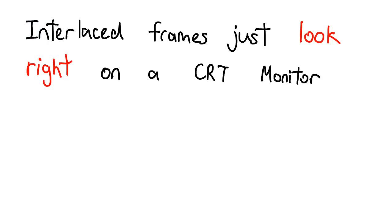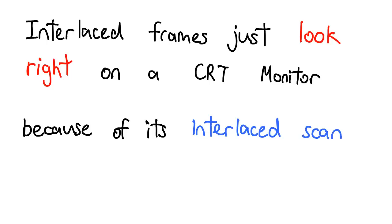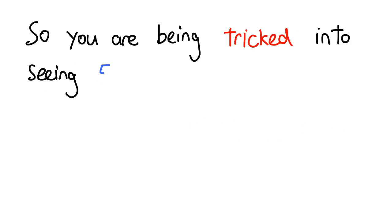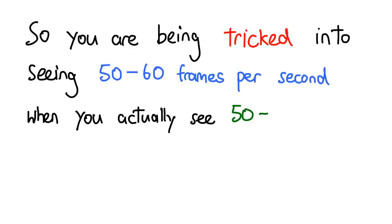Thanks to the way CRT televisions display images, it doesn't even have to process such interlaced frames. It will always display one field first, which is the first image, and then the other field comprising the next image. When displayed in quick succession, this creates the impression of your TV displaying a greater frame rate than it actually is displaying.